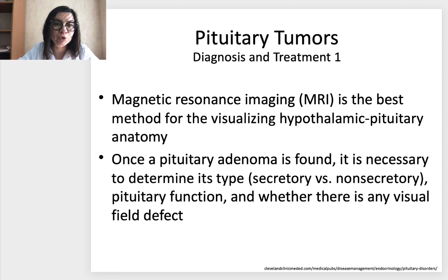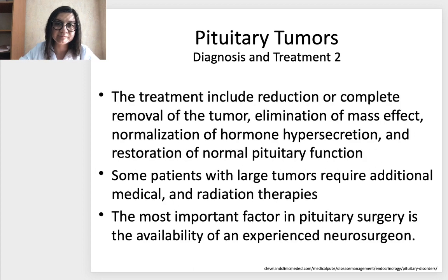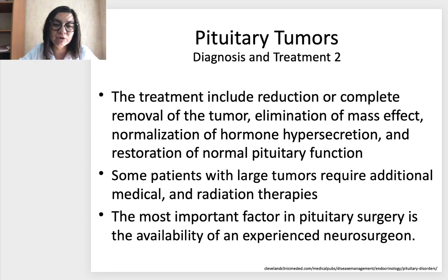Diagnosis of pituitary tumors: mostly it is MRI — magnetic resonance imaging — as the best method of visualizing hypothalamic-pituitary anatomy. Once a pituitary adenoma is found, it is necessary to determine its type — secretory or non-secretory — pituitary function, and whether there are any visual field defects. Treatment includes reduction or complete removal of the tumor, elimination of mass effect, normalization of hormone hypersecretion, and restoration of normal pituitary function. Some patients with large tumors require additional medical and radiation therapies. The most important factor in pituitary surgery is the availability of an experienced neurosurgeon.